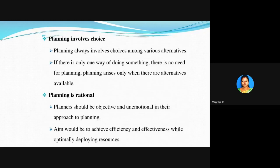The next characteristic is that planning involves choice. Planning always involves a choice among various alternatives. If there is only one way of doing something, there is no need for planning. Planning arises only when alternatives are available. Your plan means you have some steps to follow to achieve your goal, and if one plan fails you have an alternative — so it is choice-based.